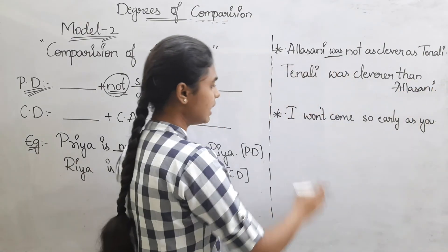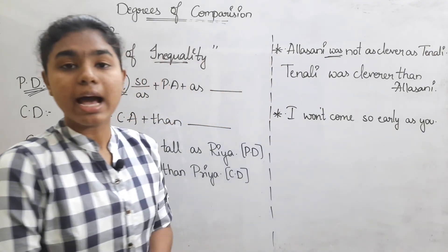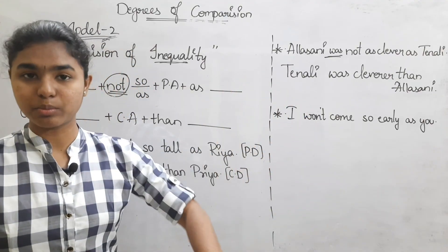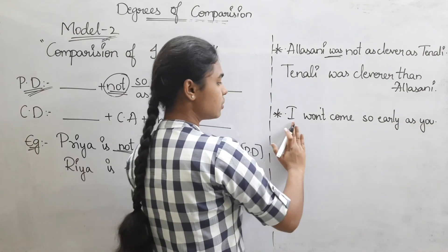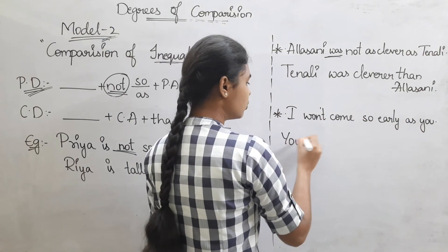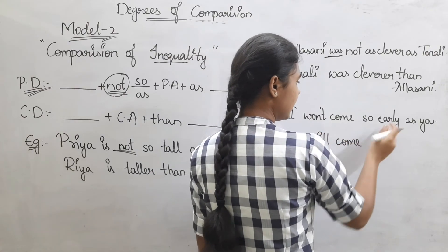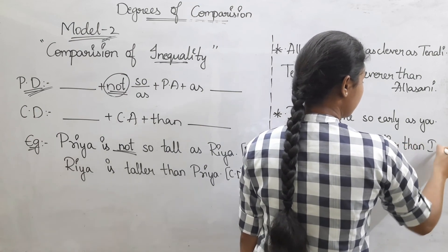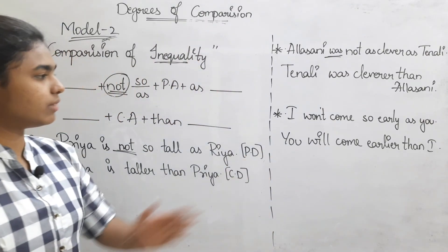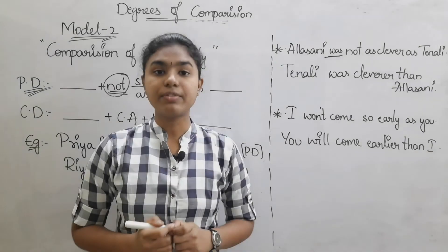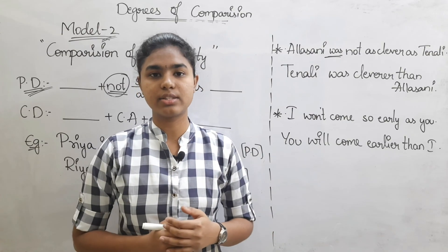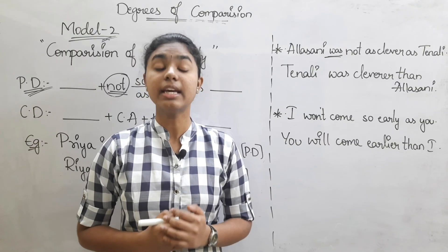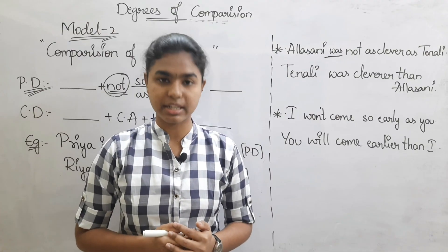Next example: I won't come so early as you. The comparative degree transformation is: You will come earlier than I. Very simple — model 2 is very easy. These are the first two models. We will finish the remaining three models in the next class. Please like, share and subscribe. Thank you so much for watching.